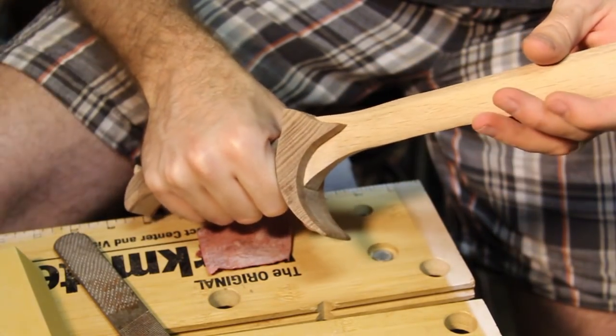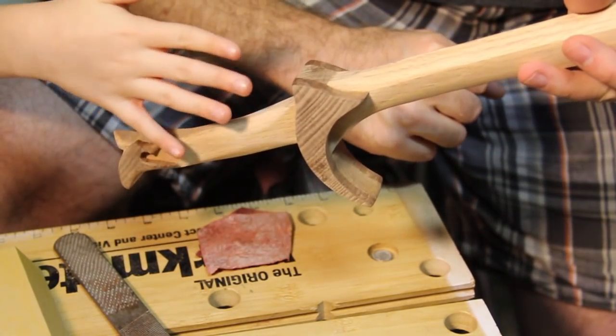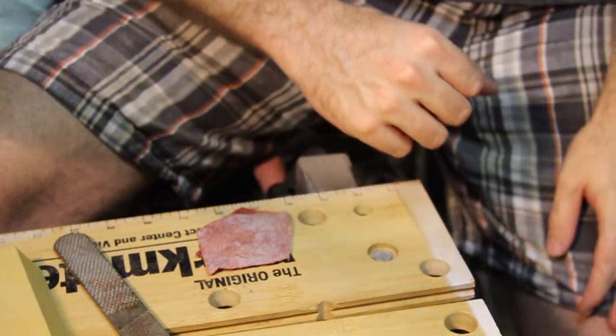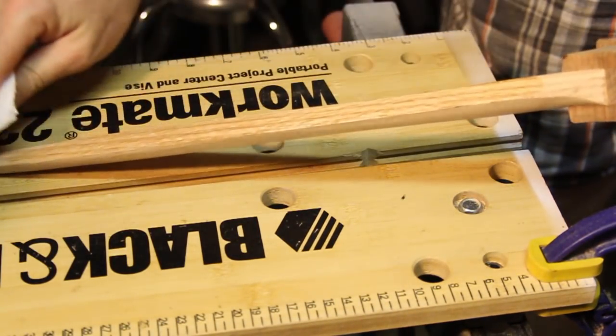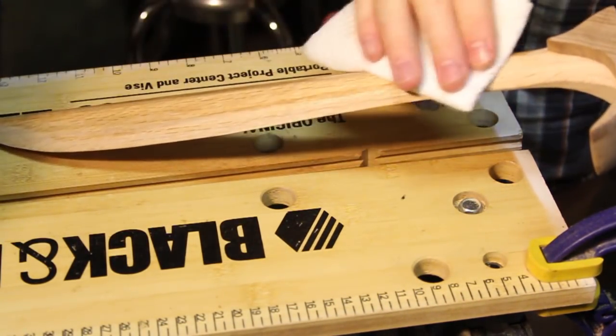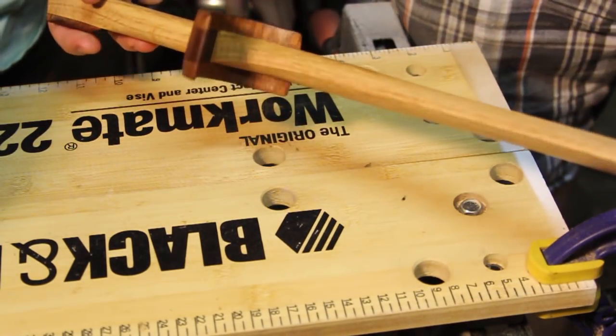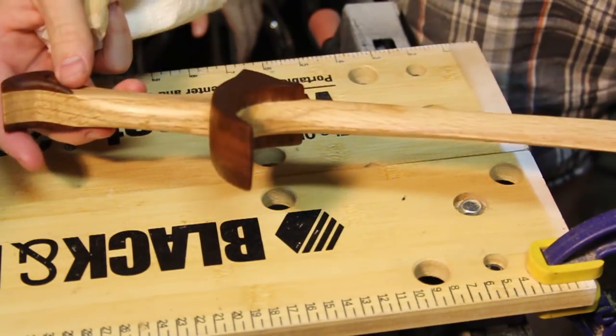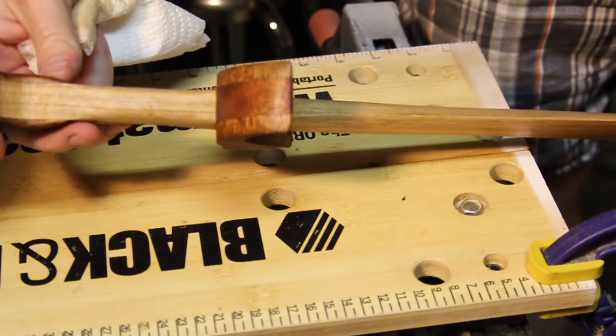Of course the project manager came by. She had the final say. I wiped the sword down with mineral spirits to get rid of any excess dust and to kind of give me an idea of what it's going to look like with the finish on. I love the way the mahogany shimmers.